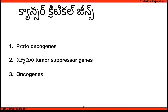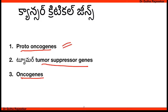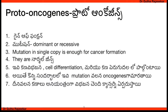In this video, I am going to explain the critical genes of cancer. There are proto-oncogenes, tumor suppressor genes, and oncogenes. Proto-oncogenes are normal genes that regulate cell processes.